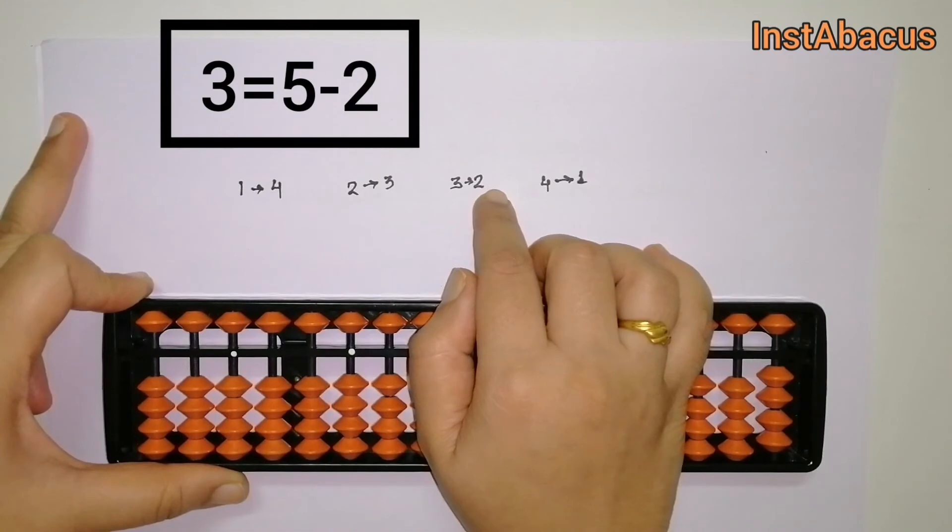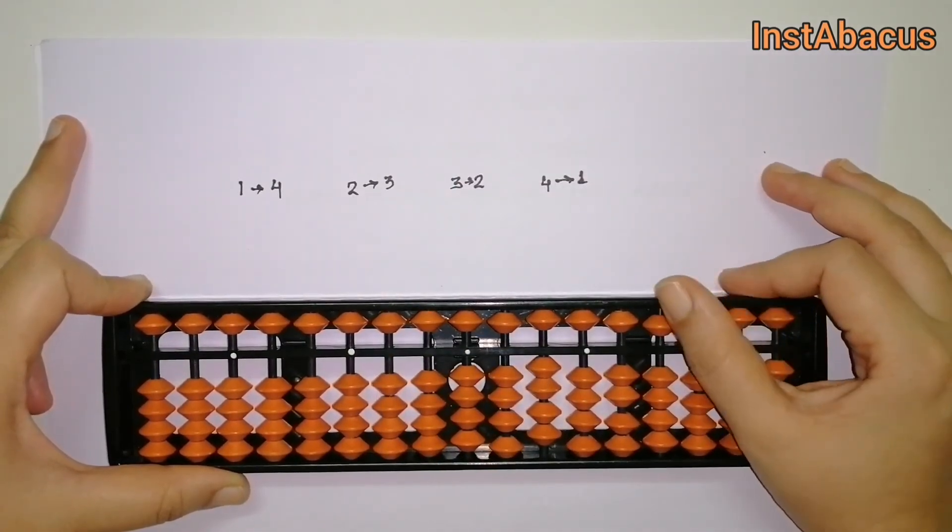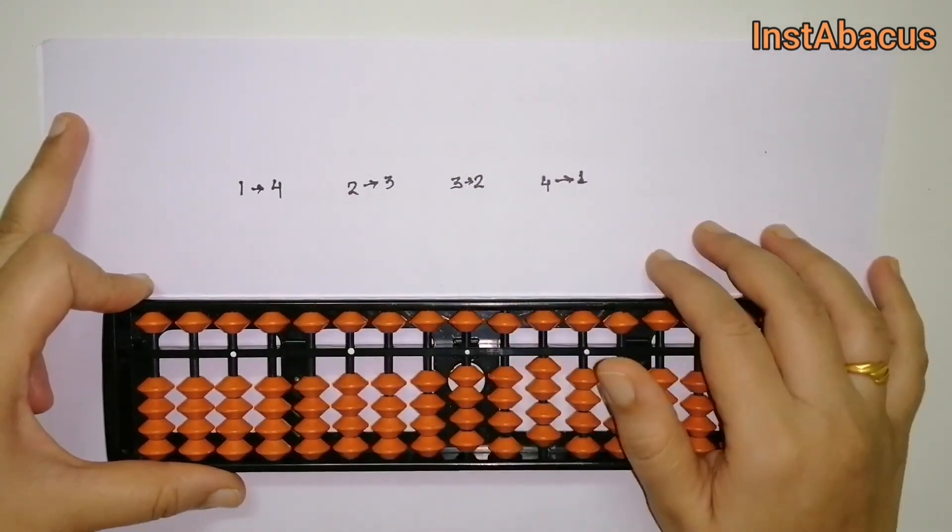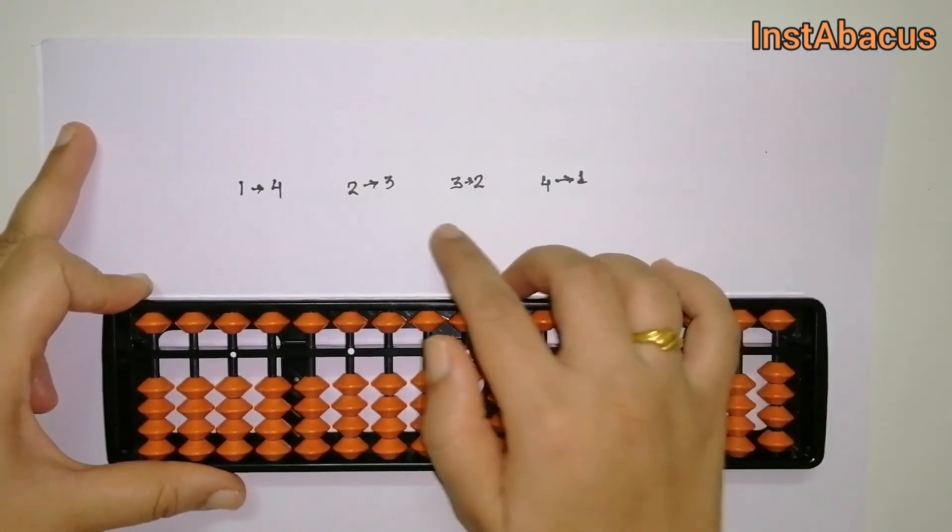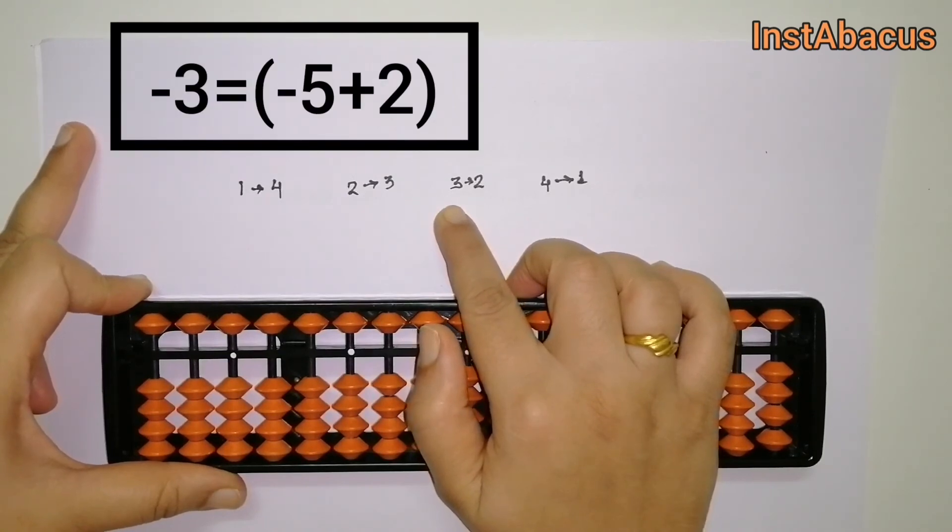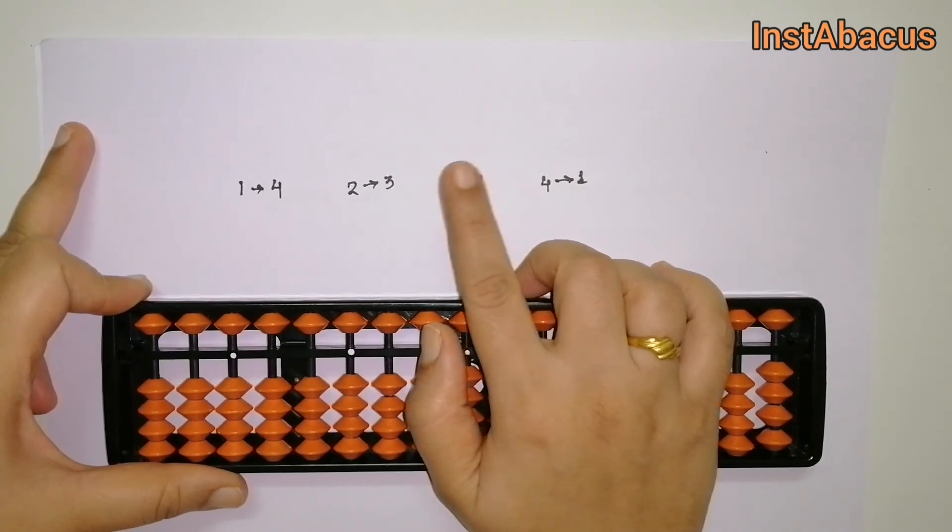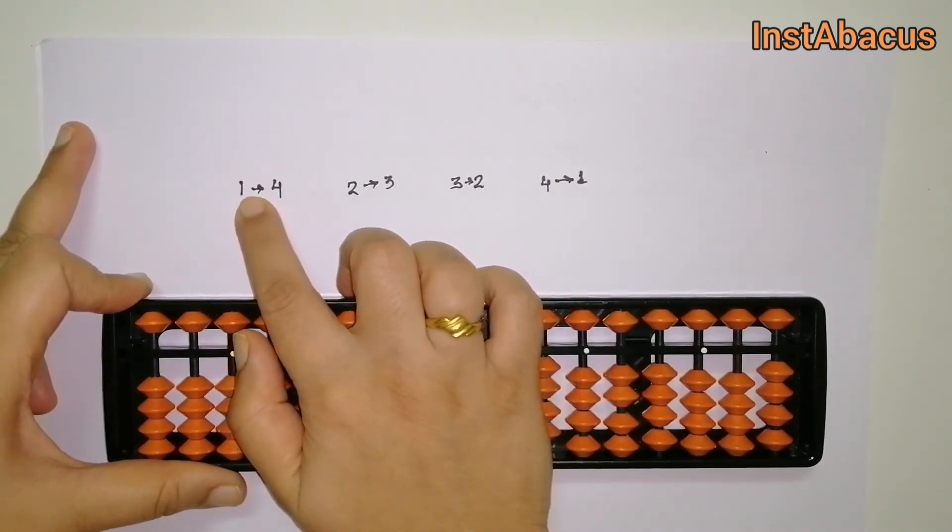For subtraction, we are going to use this in exactly the opposite form. For example, if you need to subtract three, we are going to do that as minus five plus two, because the small friend of three is two, and minus five plus two is also equal to minus three. If you want to subtract one, we are going to use it as minus five plus four.